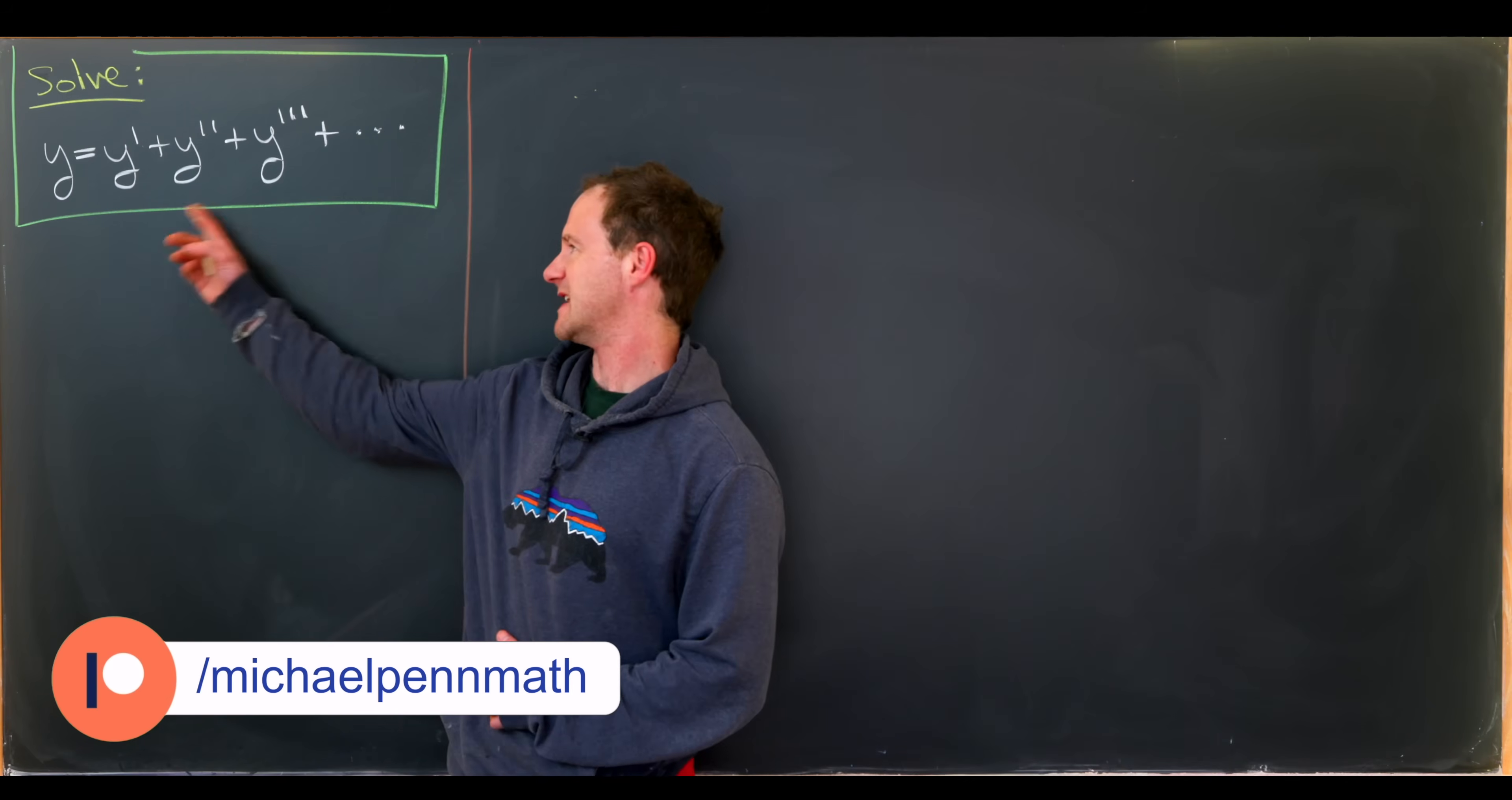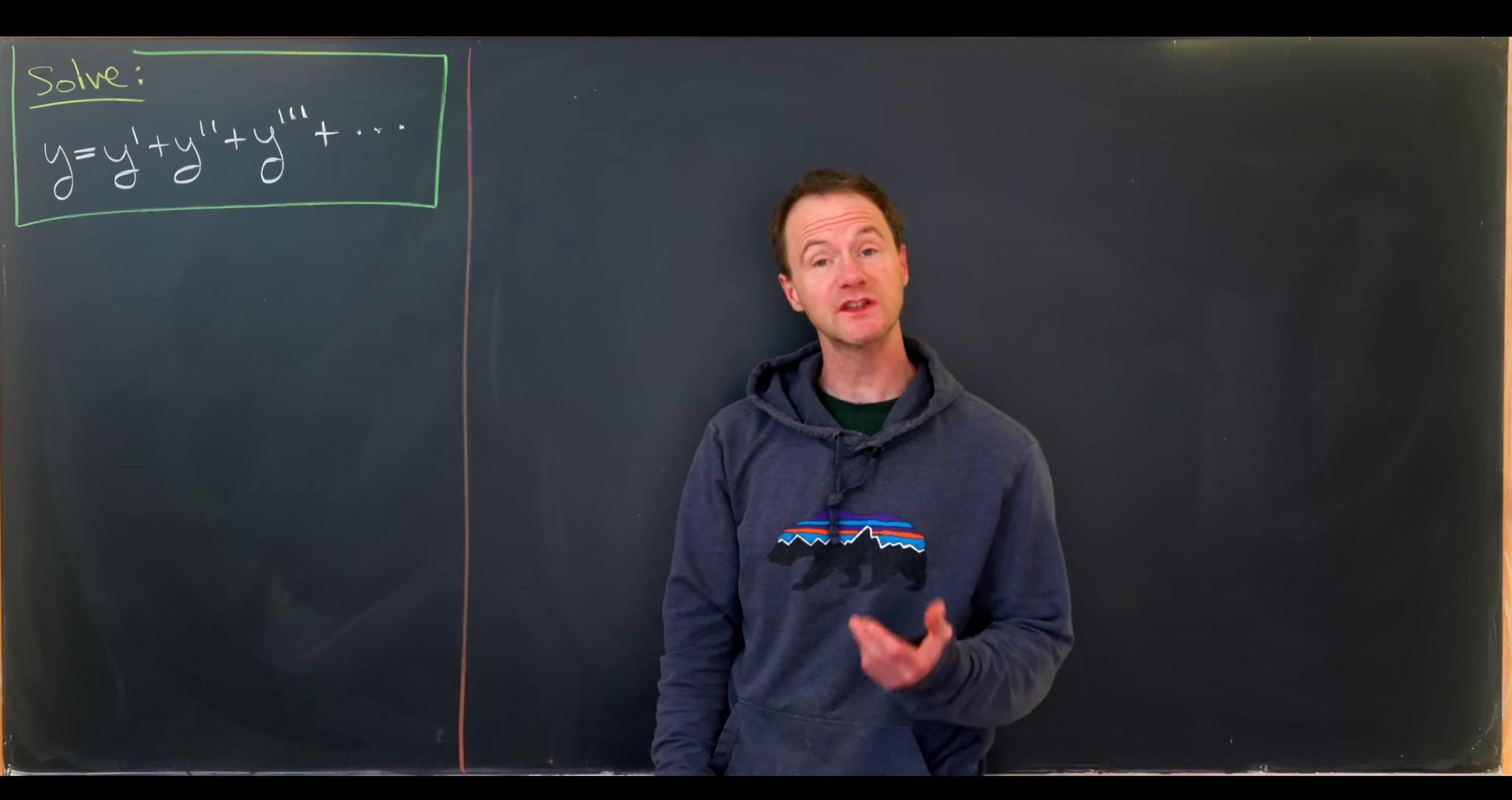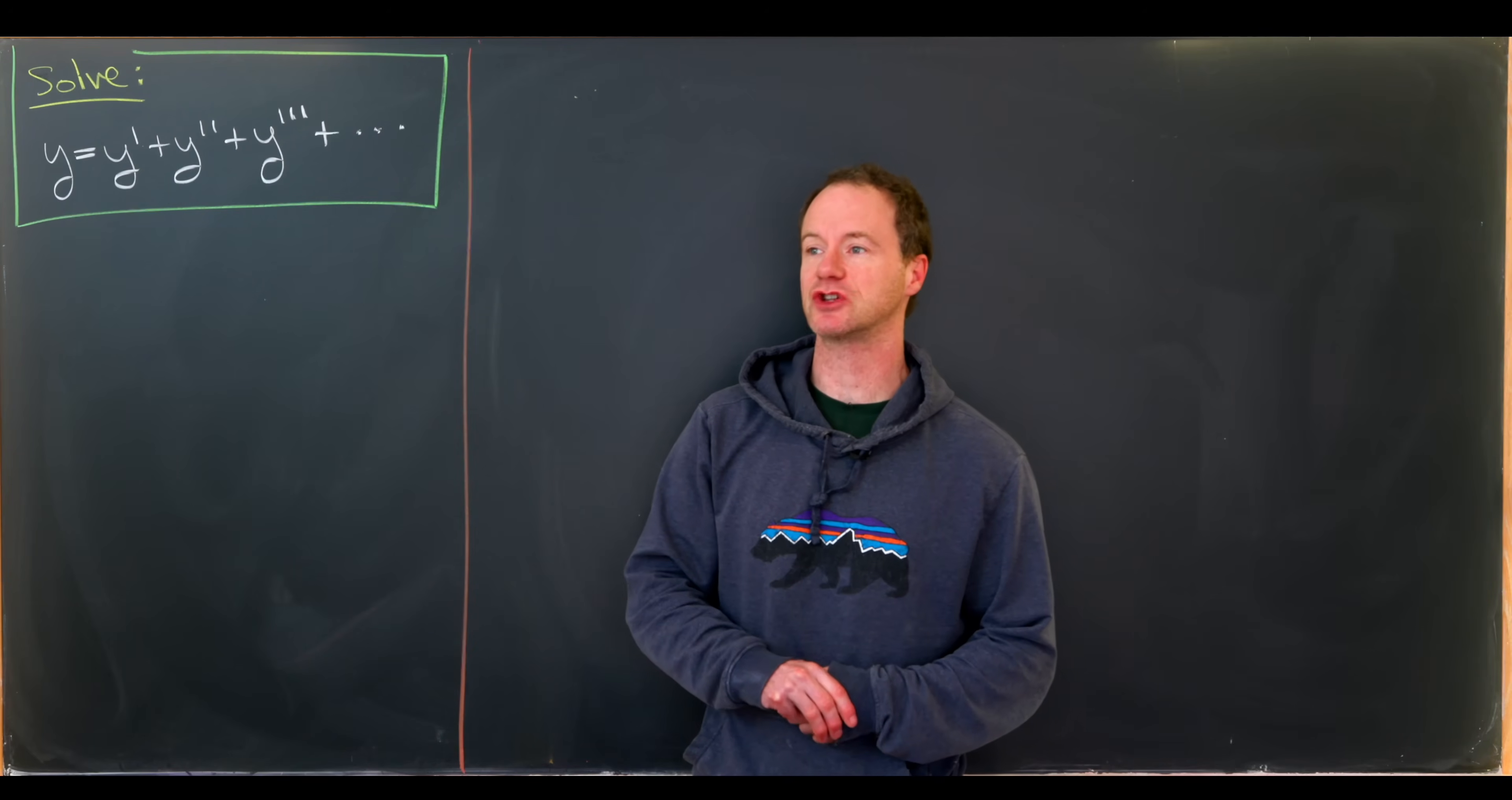So it's this infinite sum on the right hand side. And we're gonna solve this two different ways. We're gonna do a straightforward solution first, then we're gonna do a bit of a sketchy solution.